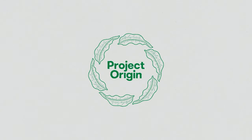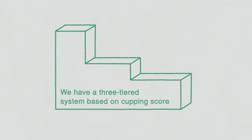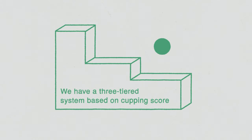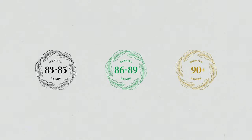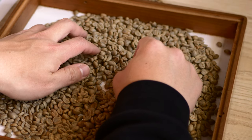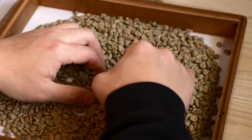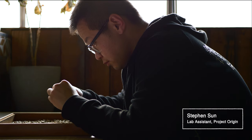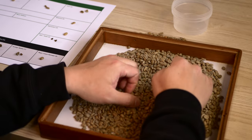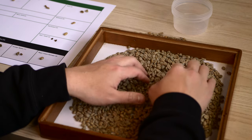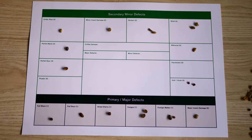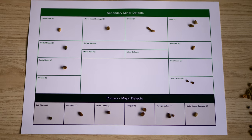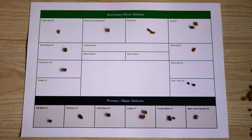At Project Origin we work with specialty coffees that are 83 points and above, and we organise them into our labels: Black, Green and Gold. The physical appearance of the green beans also helps determine the classification of a coffee. When we undergo green grading, we sort through a sample of green beans to find defects which could affect the physical appearance or the flavour of the final cup of coffee.